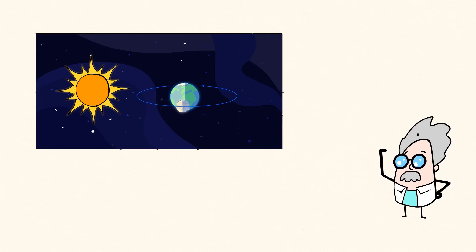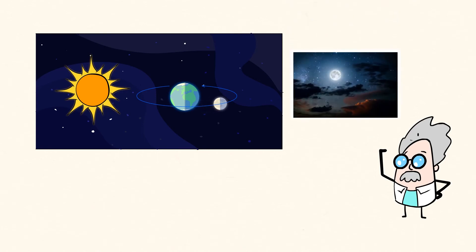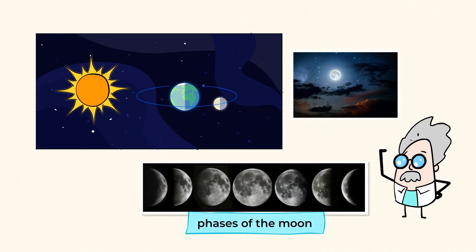As it spins, the sun is lighting up different parts of the moon. The sun's light is reflected off the surface of the moon, making it appear to glow. Scientists call these the phases of the moon. These phases repeat each month.